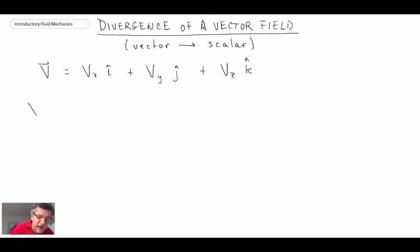And we will apply the divergence operator to that velocity field. The divergence operator, we call that del dot, and in this case it would be del dot v.